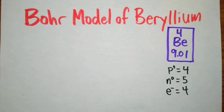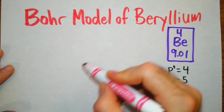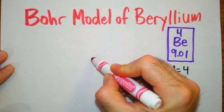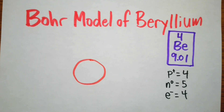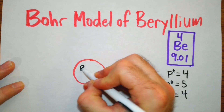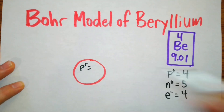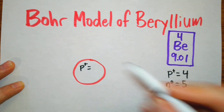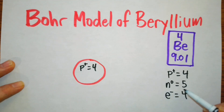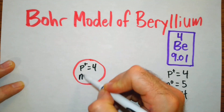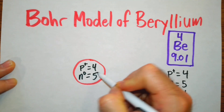Now we're going to draw the nucleus of our atom with this circle right here. We're going to put p equals four, so four protons. Then we're going to have n equals five, and that is our neutrons.